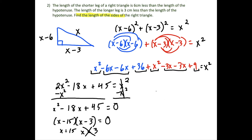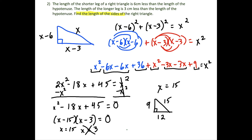So x equals 15 is our solution. Plugging back in: the hypotenuse is 15 centimeters, the longer leg is 15 minus 3 equals 12 centimeters, and the shorter leg is 15 minus 6 equals 9 centimeters. Our final answer is sides of 9 cm, 12 cm, and 15 cm.